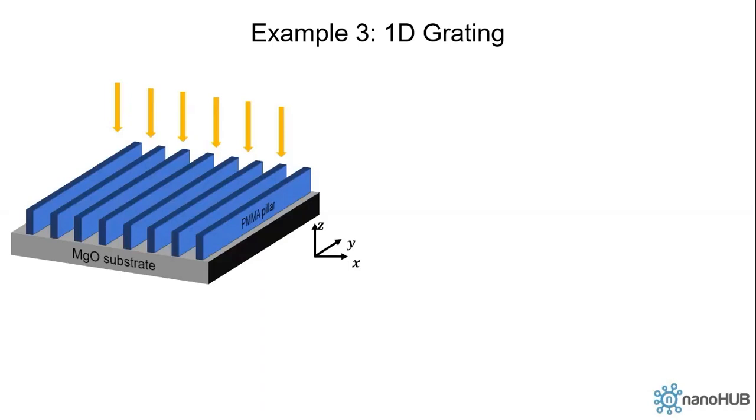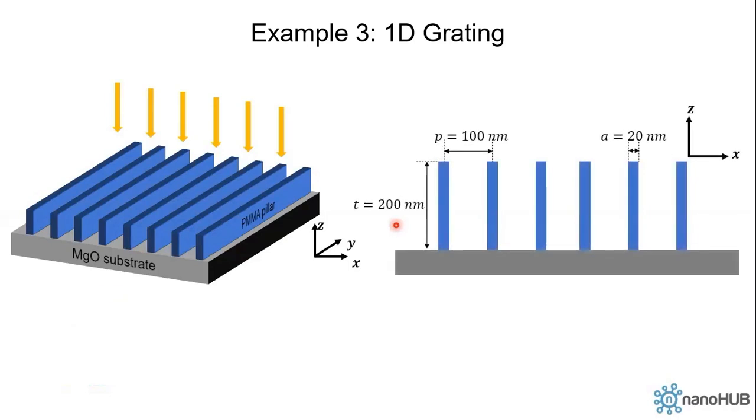Let's look at the dimension of this structure. Each PMMA pillar is 20 nanometers wide and has periodicity in the x direction. The period is 100 nanometers, and the pillar has a thickness of 200 nanometers.